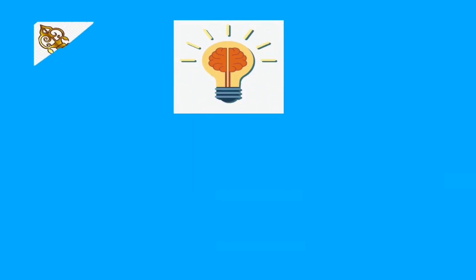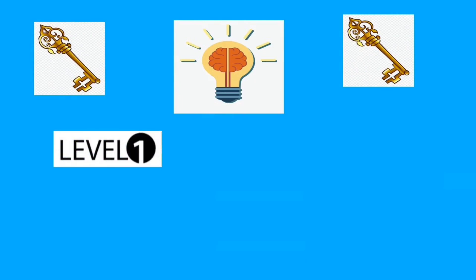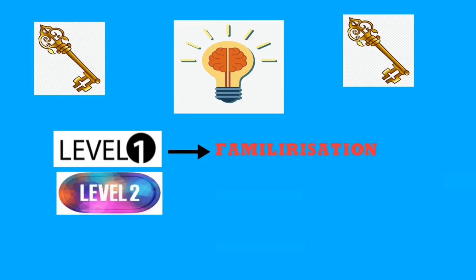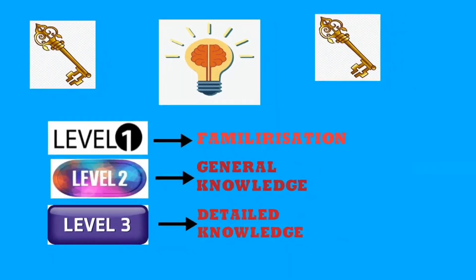In simple terms, just keep in mind three keywords: Level 1 — general familiarization of the subject; Level 2 — general knowledge; and Level 3 — detailed knowledge of the subject.